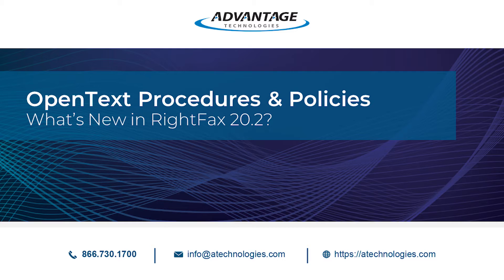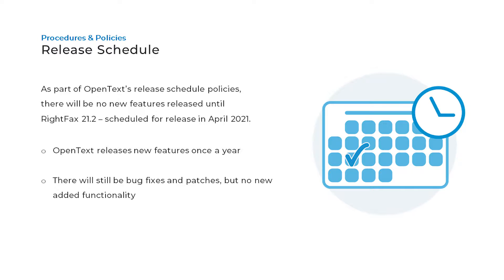Before we dive into the new features of RightFax 20.2, let's talk about OpenText procedures and policies. As part of OpenText release schedule policies, there will be no new features released until RightFax 21.2, scheduled for release in April 2021. OpenText will release new features for RightFax once a year, but there will be bug fixes and patches as needed.